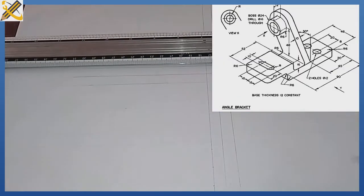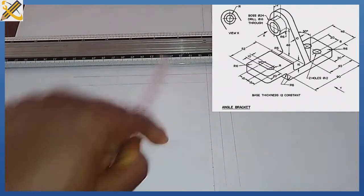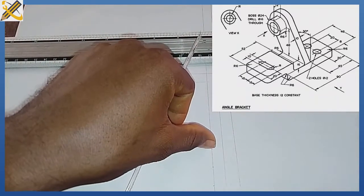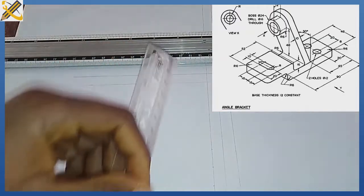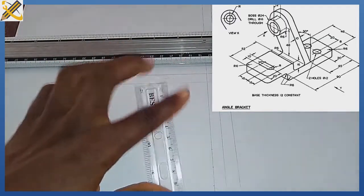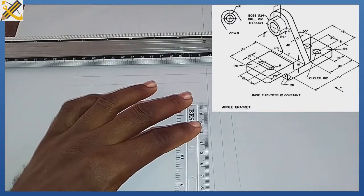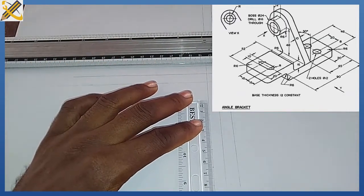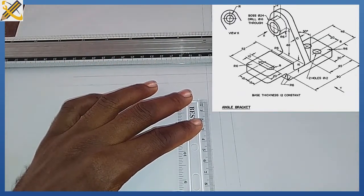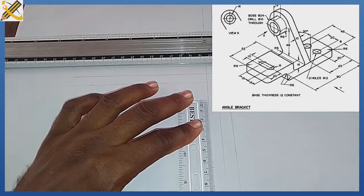So I've marked it out. Then from that point of 32, measure point 48 upwards. And this is my point 48 here.